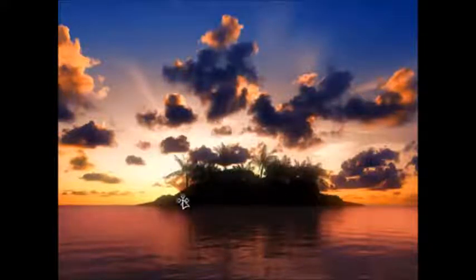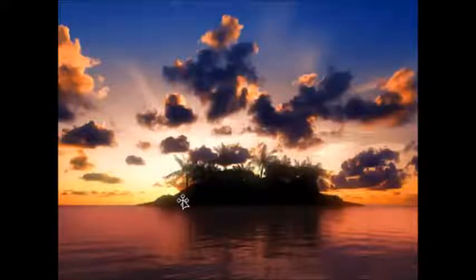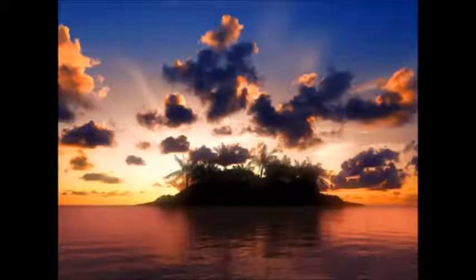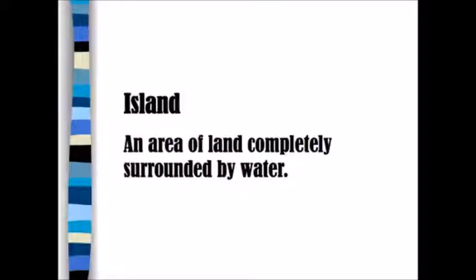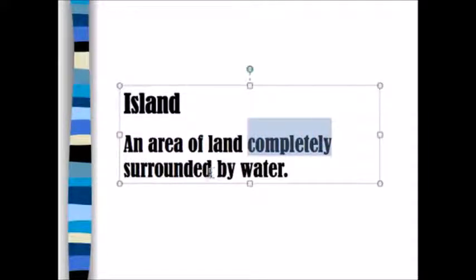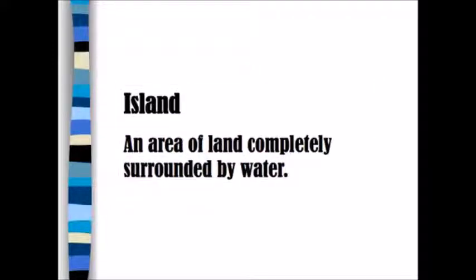What's this right here? Other than a really beautiful sunset — I mean, come on, that's just gorgeous. If you said an island, you're correct. An island is an area of land completely surrounded by water. Let's highlight, once you're done, 'completely surrounded by water.' Feel free to pause the video or go back. Otherwise, we're gonna keep going.